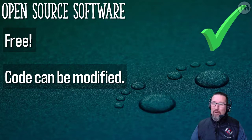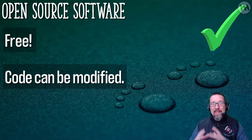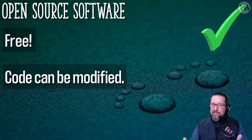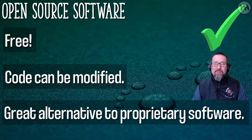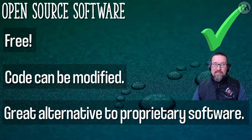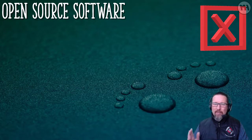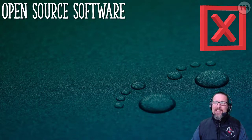Some benefits of open source software: first, it's free. The code can also be modified, so people can take a program and change it to work or look the way they want. It's a great alternative to proprietary software if you don't have a lot of money. Have a look at office suites like LibreOffice and OpenOffice — fantastic products.